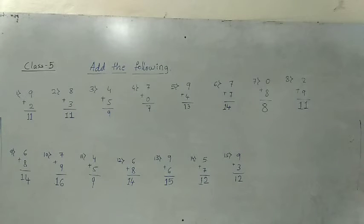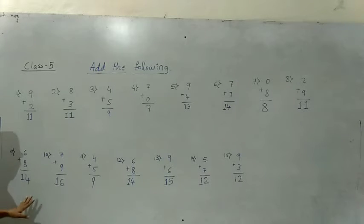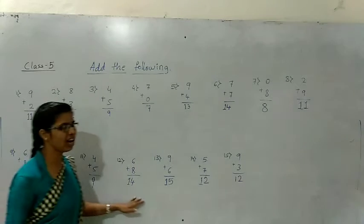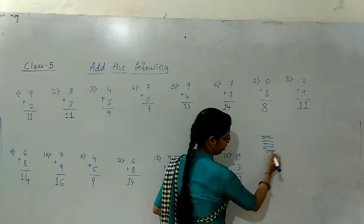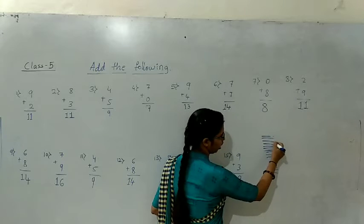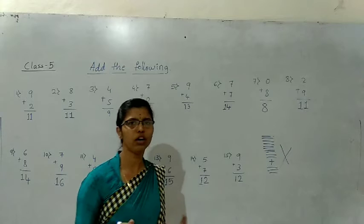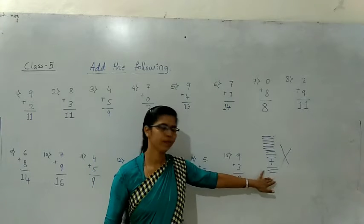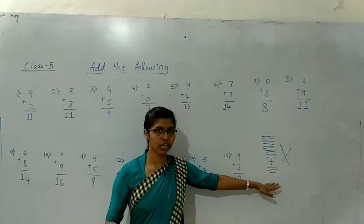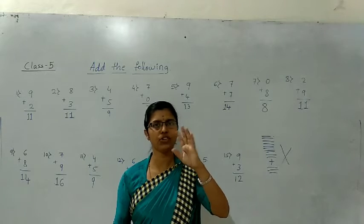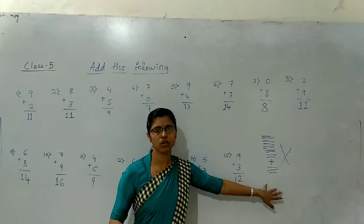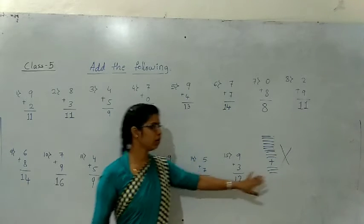15th question — dear students, you should write all these questions in your classwork book, write the answers, and check whether they are correct. Remember, don't count like this: one, two, three, four, five, six, seven, eight, nine, plus one, two, three — you should not add like this. This is wrong. You are grown-up children, so don't follow this pattern. With the help of fingers only you should add. Don't do like this — this is the wrong method.